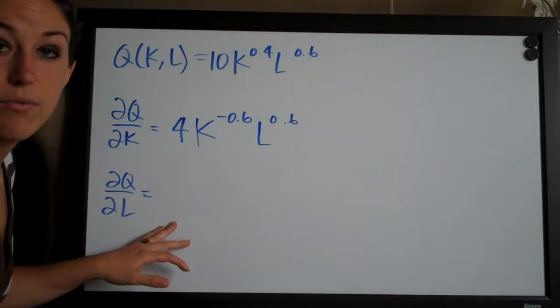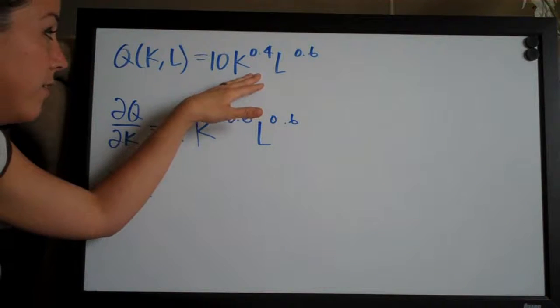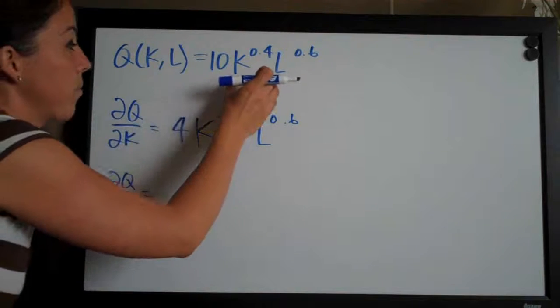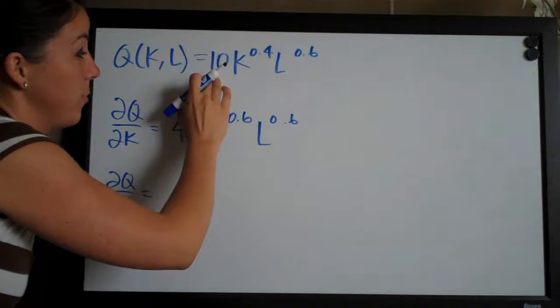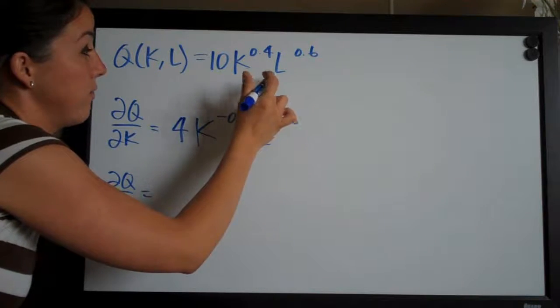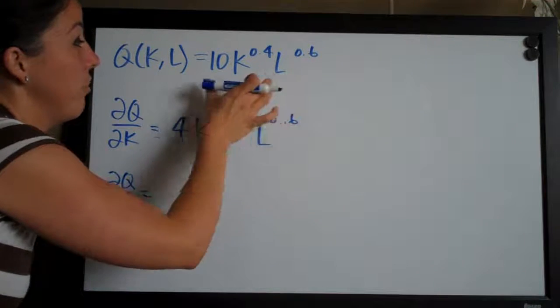Then when we take the derivative with respect to l, we do the same thing. We treat k as a constant. If we plugged in a number for k, this whole thing would just turn into a number and it would get absorbed here with this 10. So this whole 10k to the 0.4 acts like the coefficient on the l. So all that's going to stay